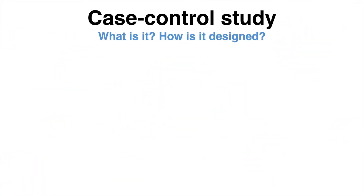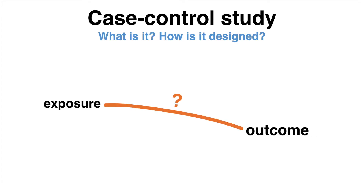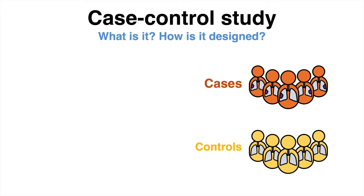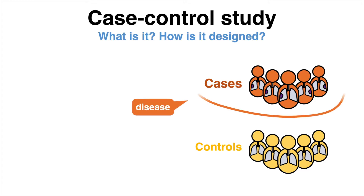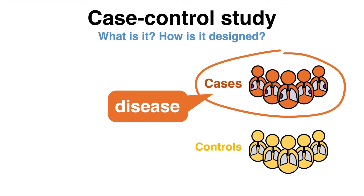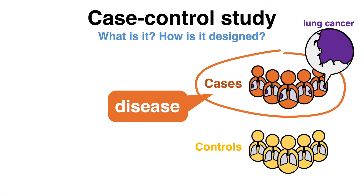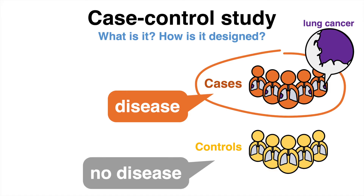Researchers using a case control study opt to determine whether an exposure is associated with an outcome. There are two groups observed: cases and controls. First, one needs to identify the cases, a group that is known to have the outcome, which might be a certain type of cancer for example. These cases are matched to controls, a group known to be free of the outcome.